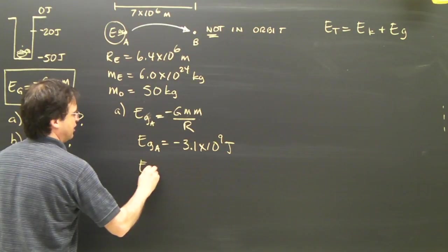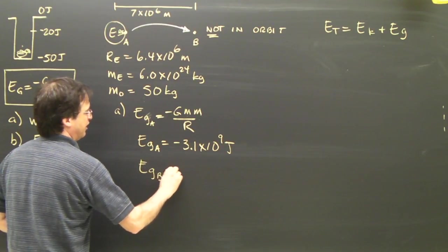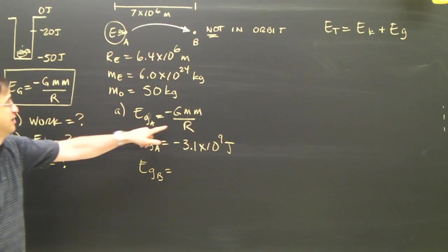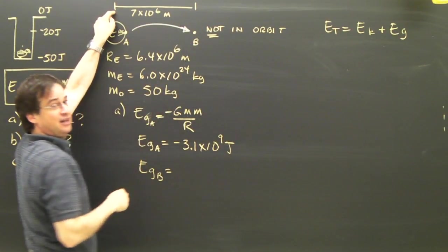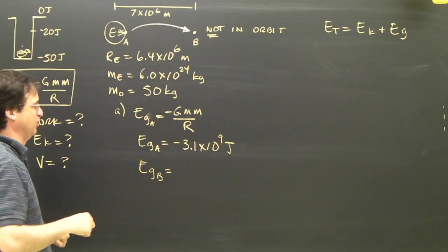If I want to find the gravitational energy at B, I use the same formula, but it's a different R. Now it's the distance from the center of the Earth to where the object is. So it's a bigger R, it's going to be a smaller number.